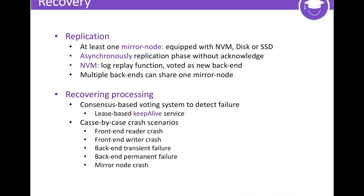SMNVM needs at least one mirror node attached with a non-volatile device like SSD disk or even NVM. The back-end node replicates the memory operation logs to mirror nodes before committing the transaction and acknowledging the front-end. Similar to most distributed systems, we use a consensus-based voting system to detect machine failures. We provide case-by-case recovery guidelines. We use key-based hashing to eliminate the potential bottleneck due to locking. This partitioning can achieve both high throughput and good scalability. Each partition has its own write lock and index, and the mapping tables between key-range and the partition are stored in the global naming space for recovery.